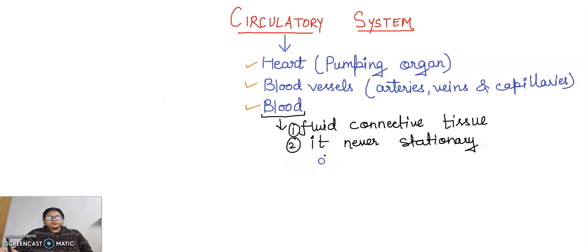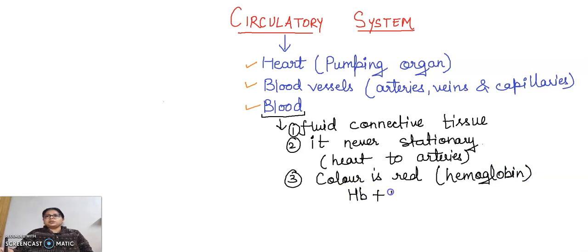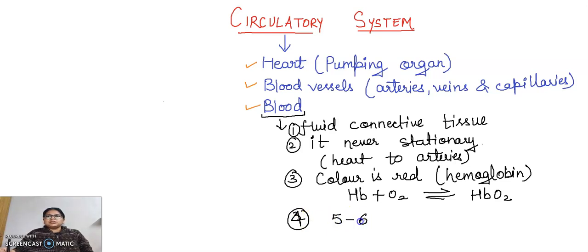The color of blood is red due to the presence of a special protein called hemoglobin. When hemoglobin binds with oxygen it forms oxyhemoglobin, that is HbO2. In an adult human body, the volume of blood present is five to six liters. The taste of blood is saltish.